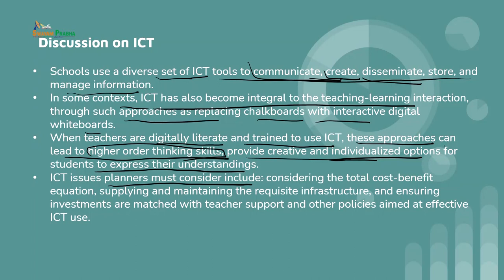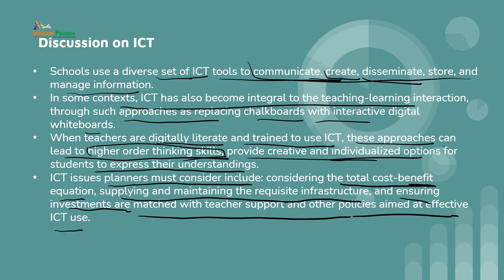ICT planners must consider the total cost-benefit of equations, supplying and maintaining the requisite infrastructure, and ensuring investments matched with teacher support and other policies aimed at effective ICT use. Planning and implementation should be correlated. If you have planned technology, you know how expenditure goes, what the infrastructure requirements are, and what policies to adopt to help learners keep pace. Requisite information is important to take up the infrastructure, and investments need to be raised — be it grants or funding from governments. In addition, the expertise of students and teachers is also required.